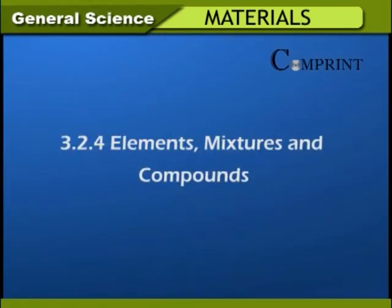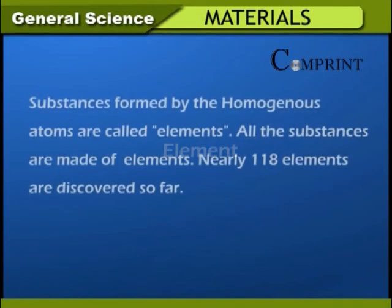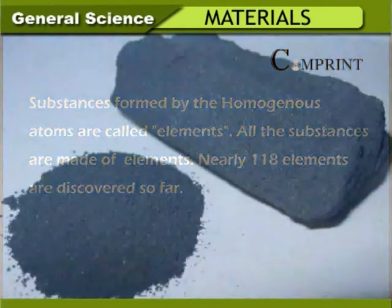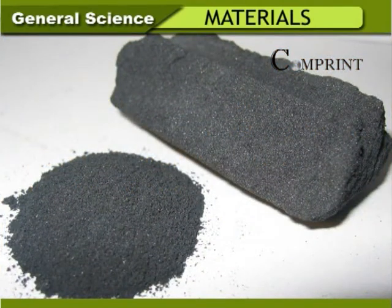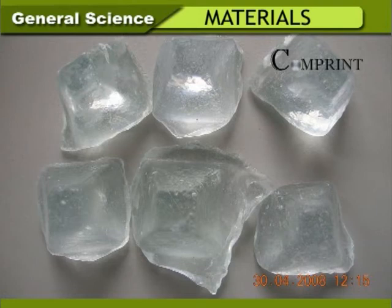Elements, Mixtures, and Compounds — Elements: Substances formed by homogeneous atoms are called elements. Nearly 118 elements have been discovered so far. Elements in solid state: carbon, iron, sodium. Elements in liquid state: mercury, bromine. Elements in gaseous state: nitrogen, oxygen, hydrogen.